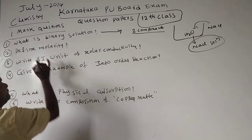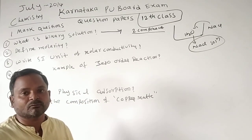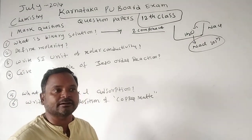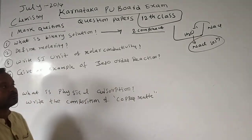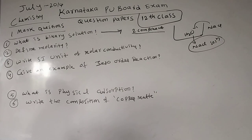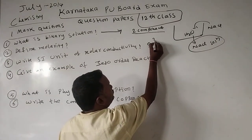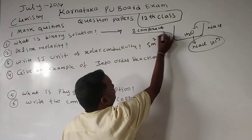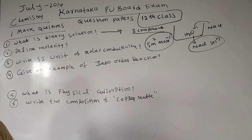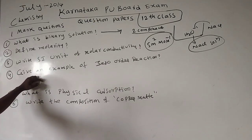Next: define molarity. The number of moles of solute present in one liter of solution, we call as molarity. Next: SI unit for molar conductivity. The SI unit for molar conductivity is Siemens square meter per mole (S·m²·mol⁻¹). This is the important SI unit for molar conductivity.